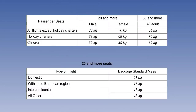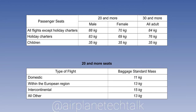EU Ops states that the operator, when establishing the take-off mass of the aeroplane, must use either the actual weighed mass values or the standard mass values laid down in EU Ops. The standard masses cover crew, passengers and their baggage. We will look at each requirement in turn, and on screen you will see an example of a mass value table, which we will examine later.